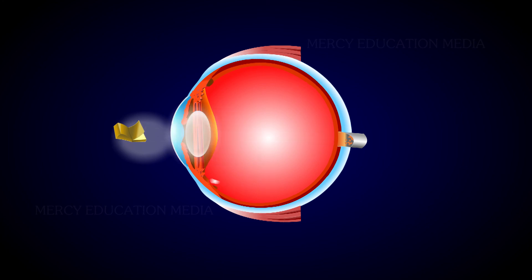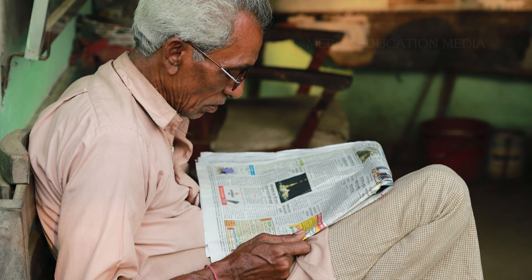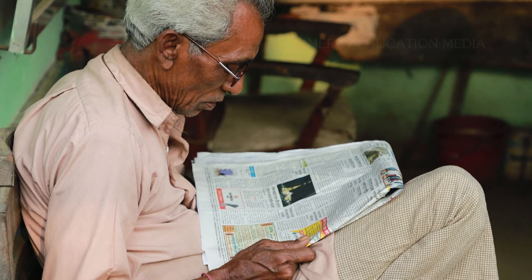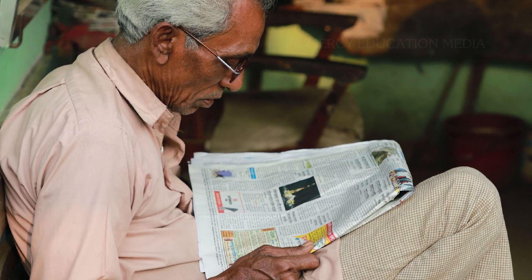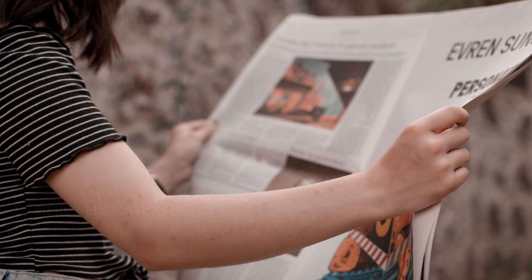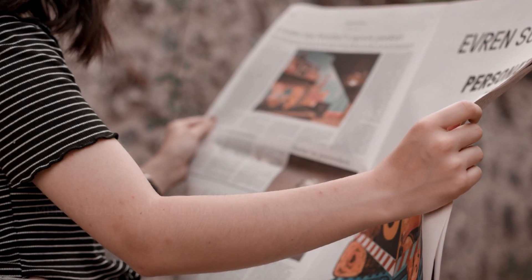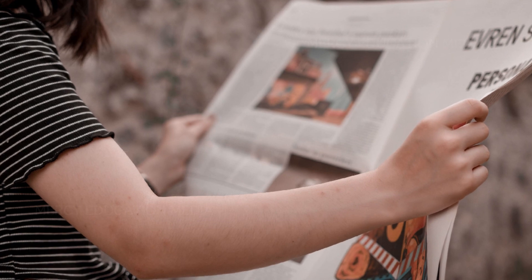As we age, our lens becomes less flexible and resists change in shape, so our ability to see close objects is diminished. Usually, the first sign of presbyopia is the need to hold the newspaper or any other reading material at arm's length to be able to read them.